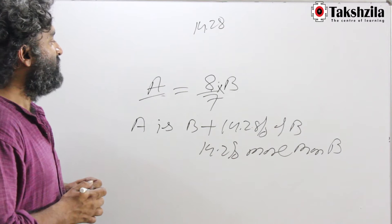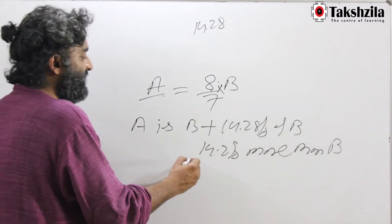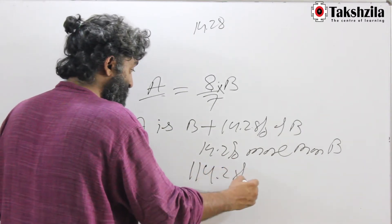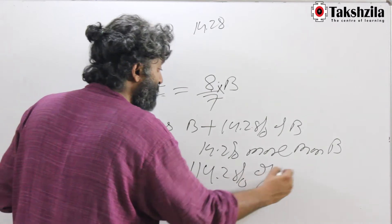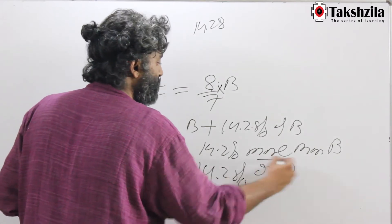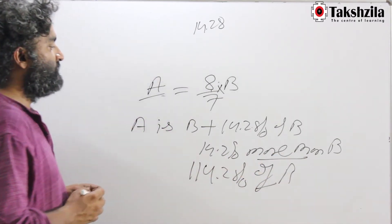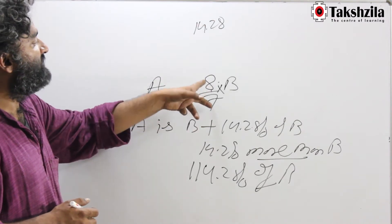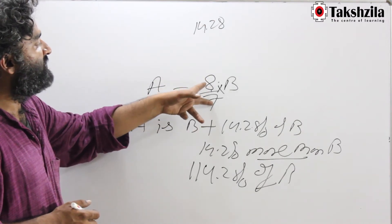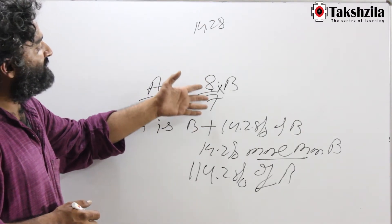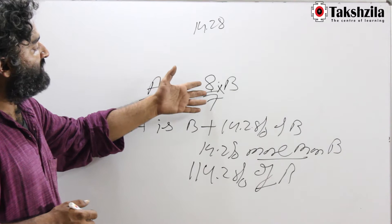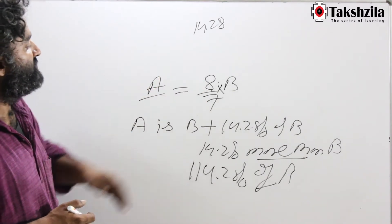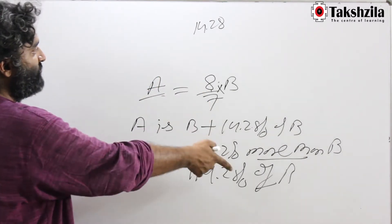A is 14.28% more than B. Or I could also say A is 114.28% of B. This depends on knowing that this fraction also represents a percentage form, and I can interpret it in percentage form — which is what we are doing here.